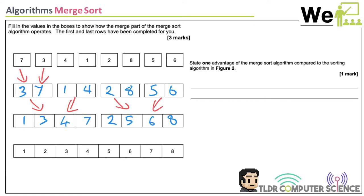State one advantage of merge sort compared to bubble sort. It's much faster — more efficient — particularly when there is a large array.